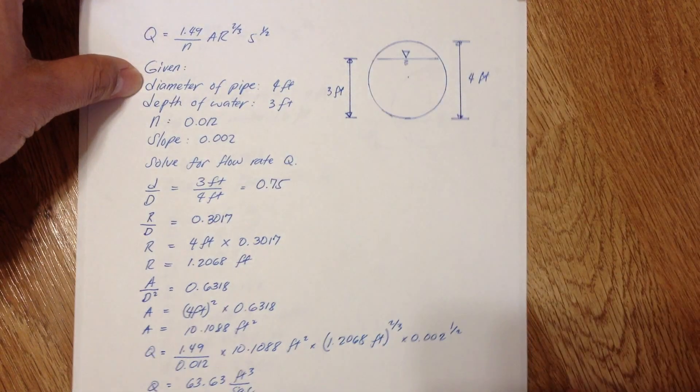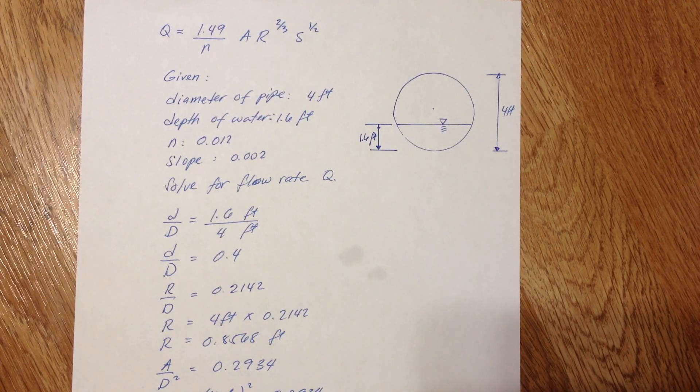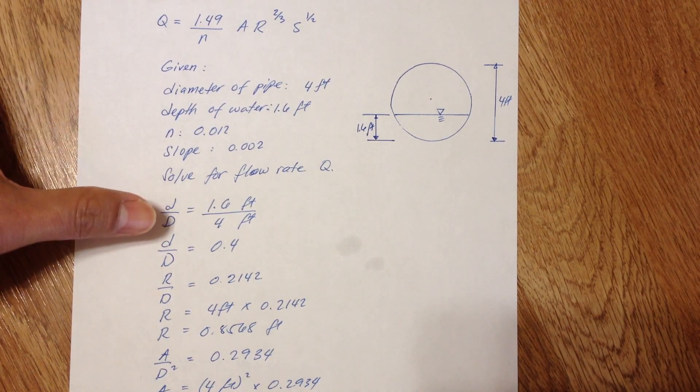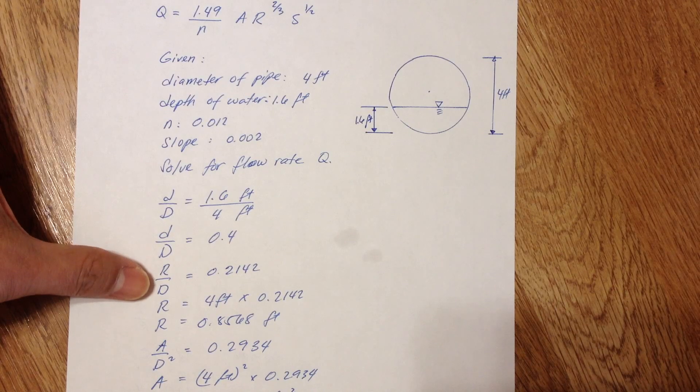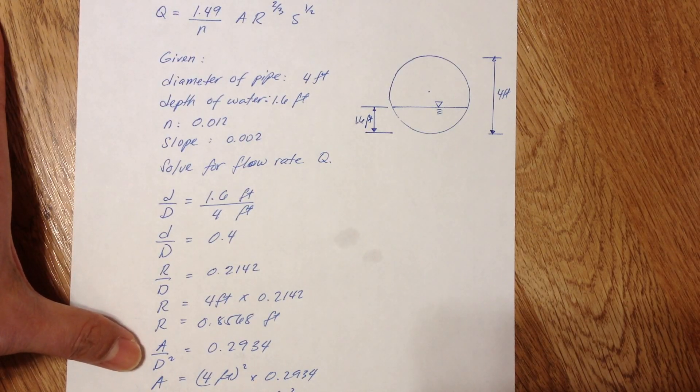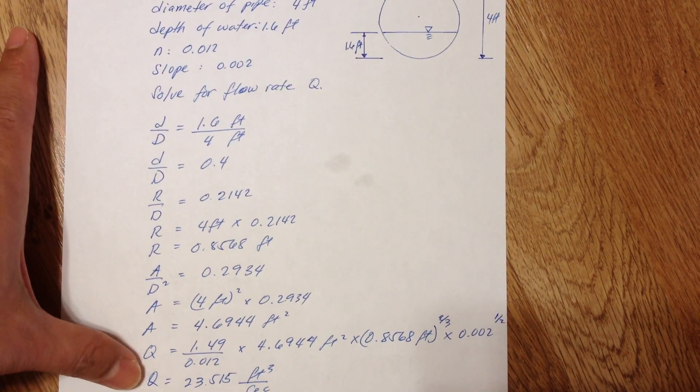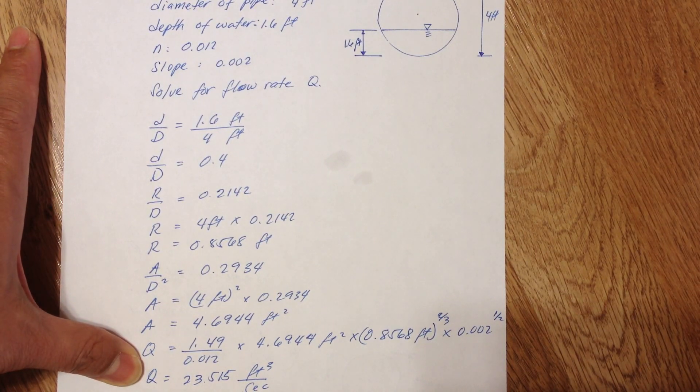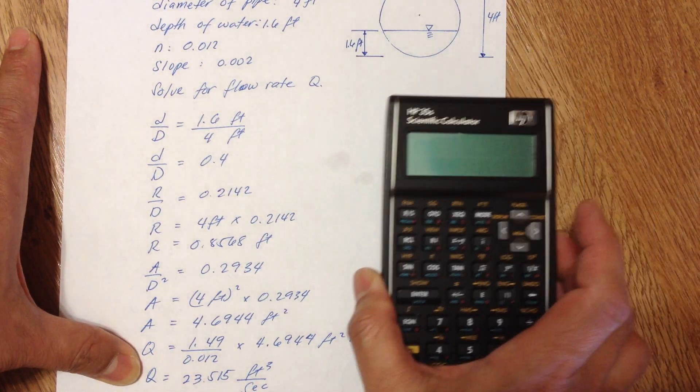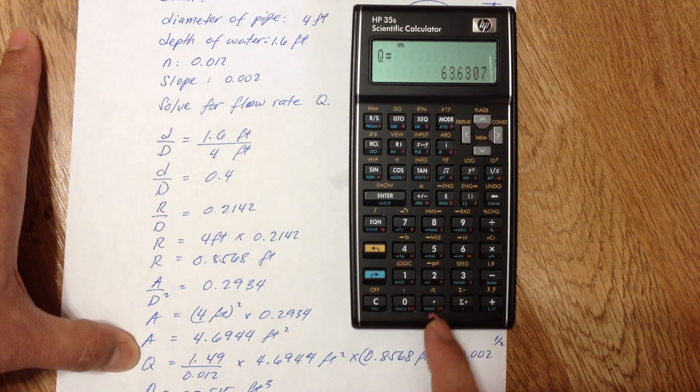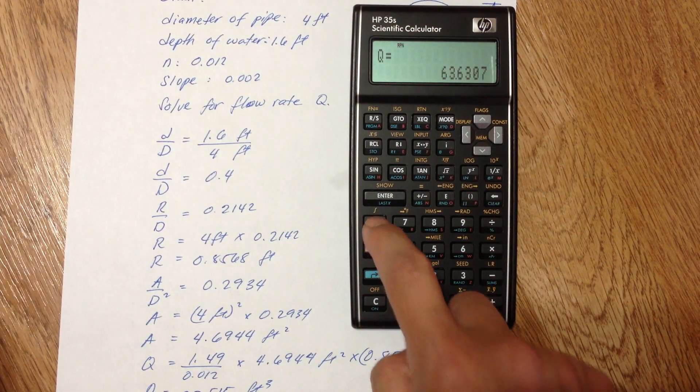And also, what if the water is flowing below the center of the pipe? Same thing, we're gonna do D over D and then look for the R over D value and A over D squared value, and then substitute that in the equation. You get a Q of 23.515.